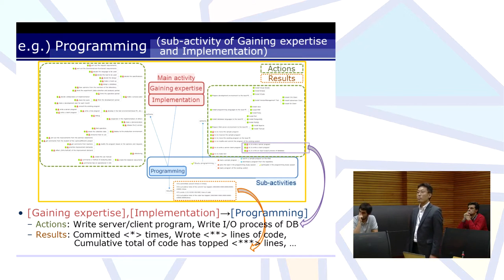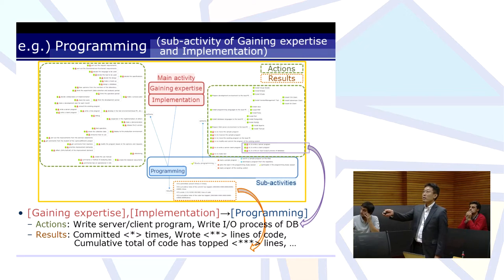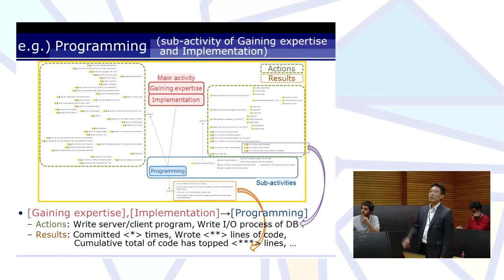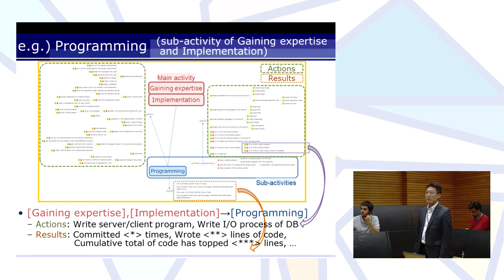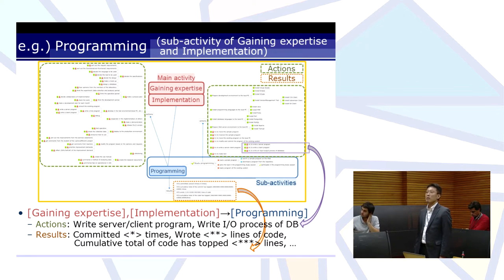This is an example of programming, which is one of the sub-activities. Programming is a sub-activity of gaining expertise and implementation as a main activity. Sub-activity programming also includes some actions and results. When users select actions such as 'write server or client program' and move into them, they can gain results such as 'committed 10 times', 'wrote 100 lines of code', or 'accumulated total of code has topped 10,000 lines'.